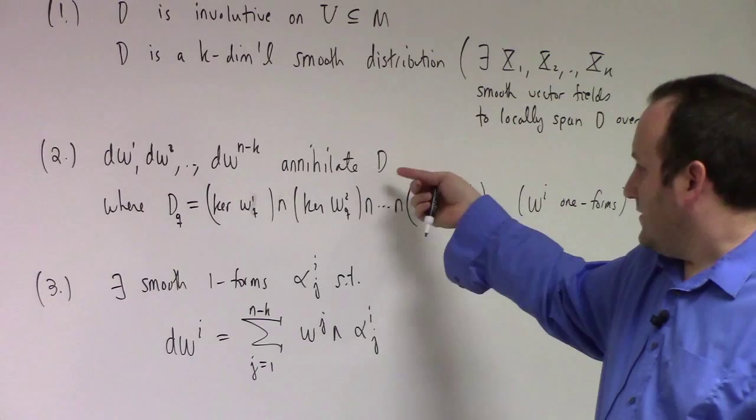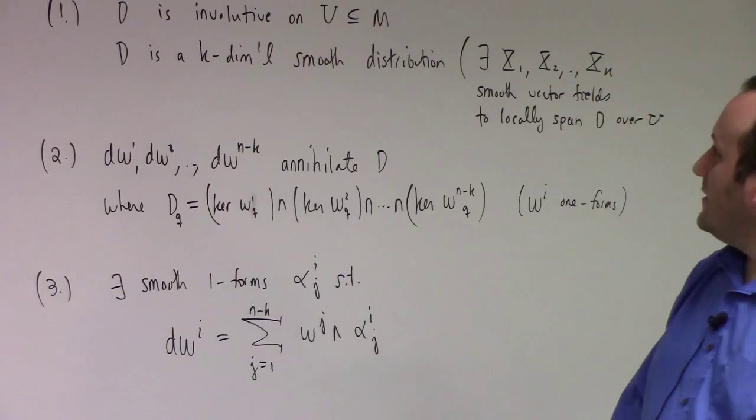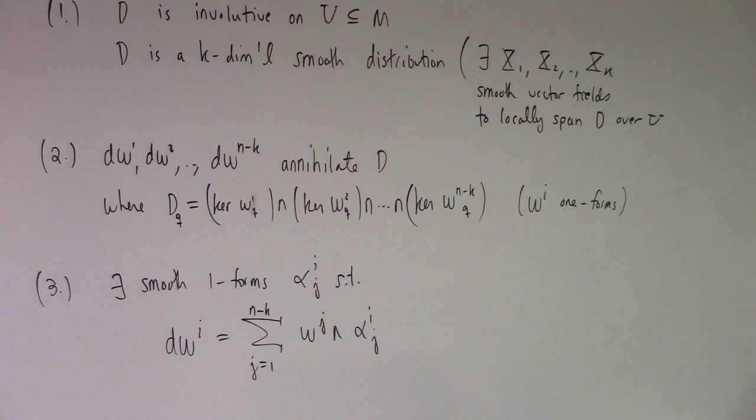Going from statement two to statement three is a little more subtle — I won't go over it. I may have already done it last time; I can't remember what I covered. Anyway, those are the Frobenius theorem equivalent statements.